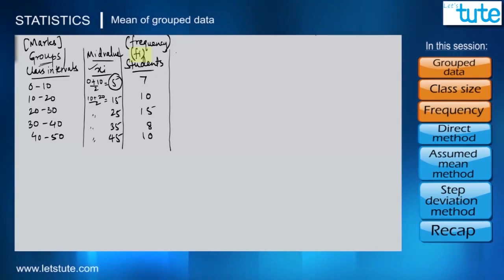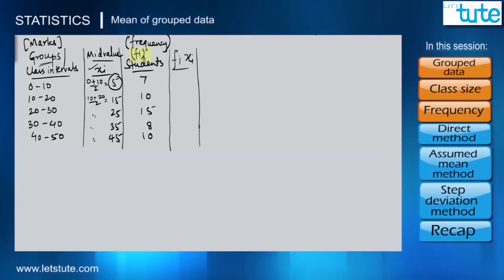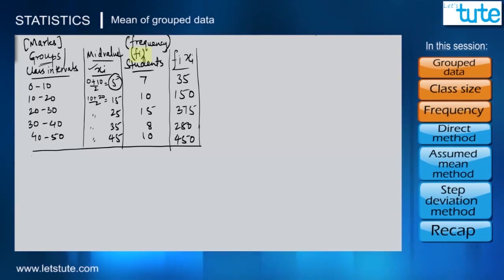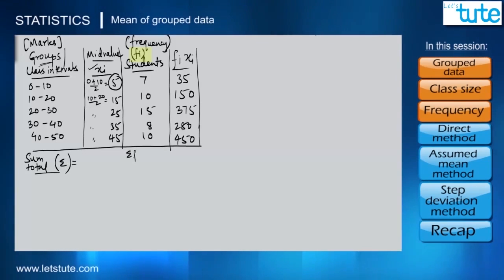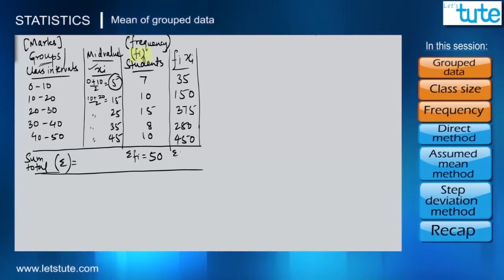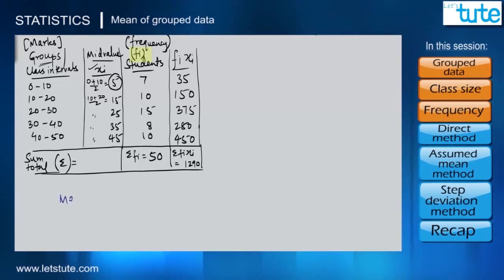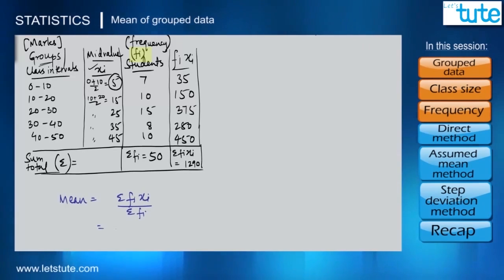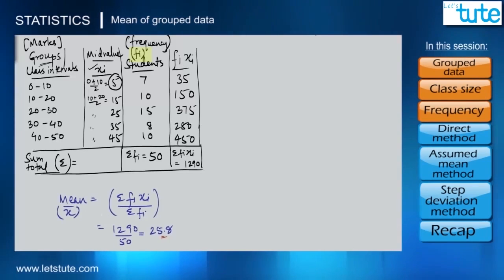The next step is to find the product of frequency and mid values, fi·xi. So f1 is 7 and x1 is 5, giving 7 × 5 = 35. Similarly, f2·x2 gives 150, and we calculate fi·xi for every class. We then take the sum using sigma notation: the sum of all frequencies (Σfi) is 50, and the sum of all fi·xi values (Σfi·xi) is 1290.